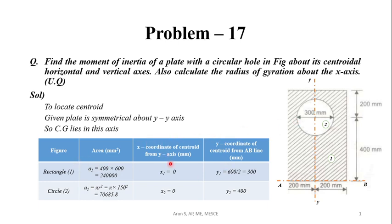We will consider a table as shown. In the figure, we have a full rectangle and a circular hole of 300 mm diameter. For the rectangle, the base is 400 mm and height is 600 mm, so the area will be 240,000 mm². The x-coordinate of the centroid from the y-axis: since the centroid lies on the y-axis, x₁ = 0.